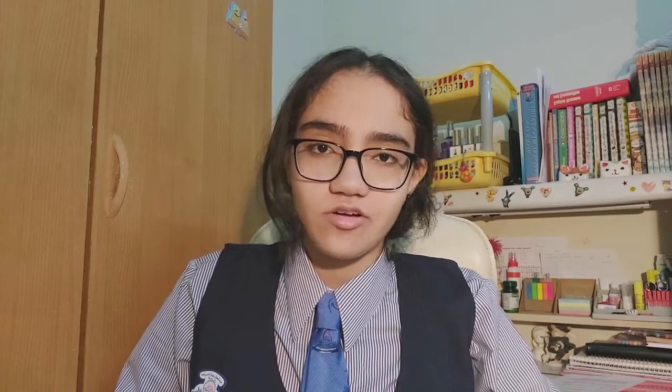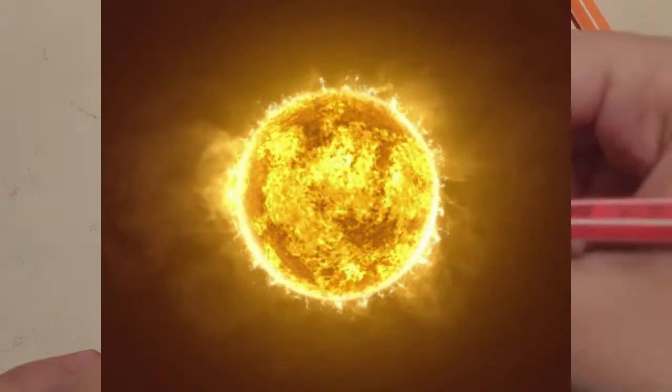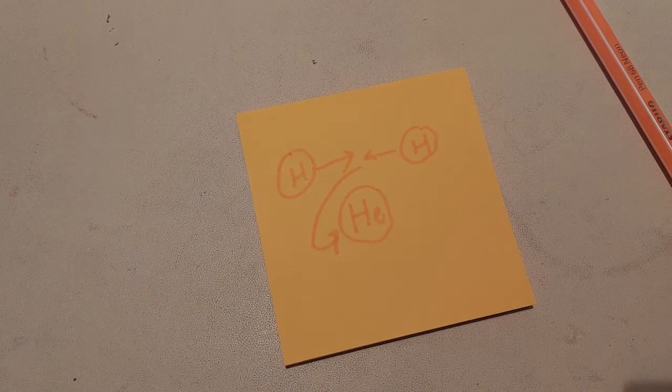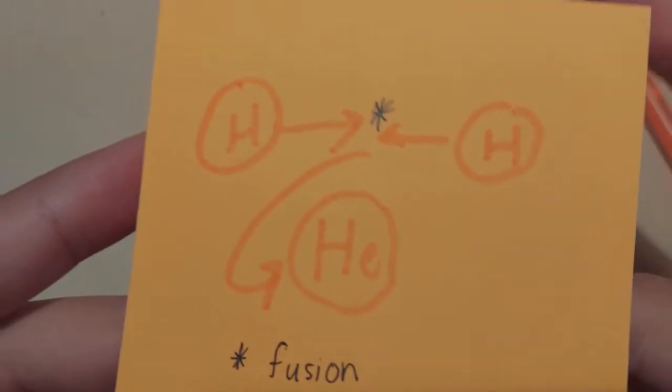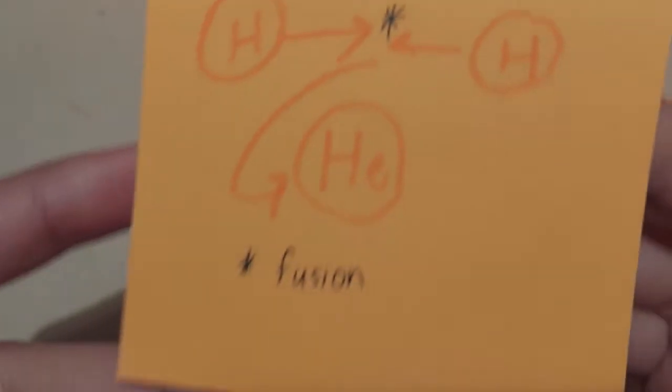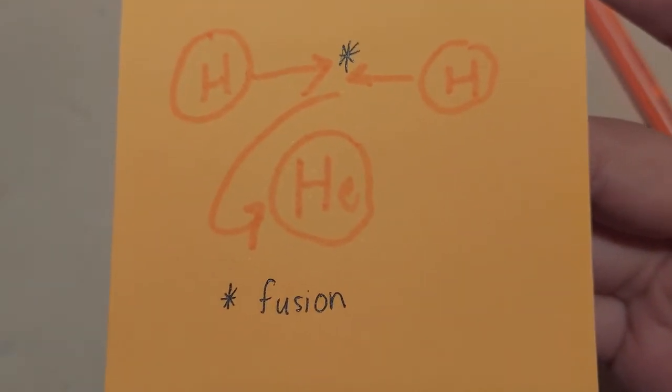And now, the million dollar question — where does the sun get its energy from? The sun does release a huge amount of energy, but not from burning fossil fuels or anything like that. Instead, the sun releases its energy by a process called nuclear fusion. The sun consists largely of hydrogen, and during nuclear fusion the high pressure and temperature in the sun's core causes hydrogen nuclei to fuse together to form one helium atom, and during this process radiant energy is released.